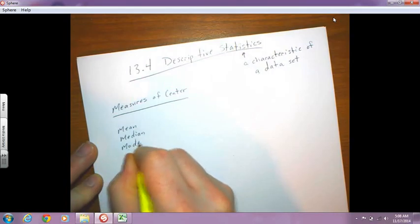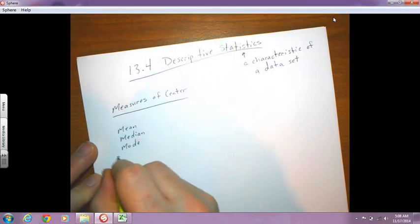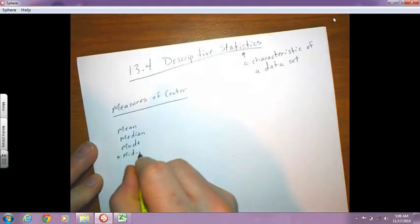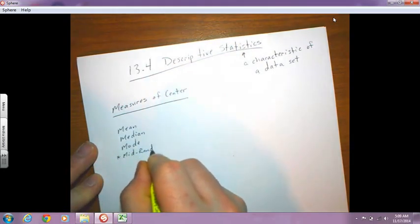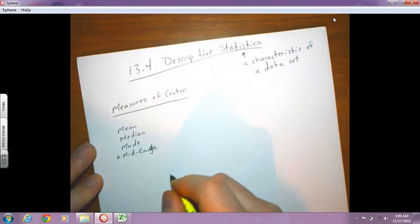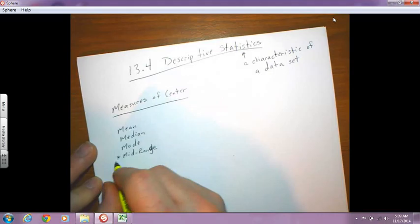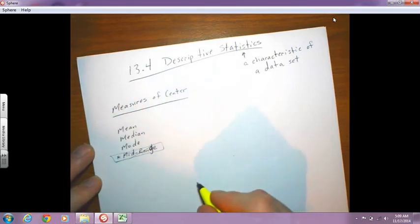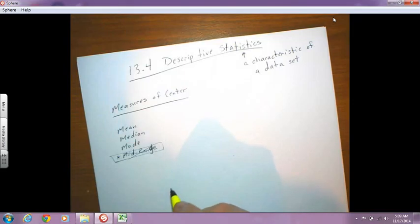And there is another one which is hardly ever used, but that's called the midrange. And it's so hardly used that your book doesn't even mention it. So that's why I put the asterisk here to know that we can probably get rid of that one. It's not very accurate, but it's nice to know that there are other ones out there that exist. So mean, median, and mode are the three we want to focus on.